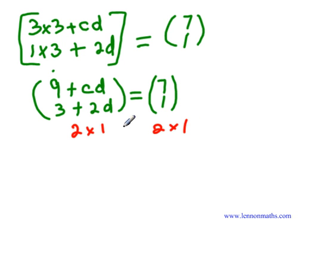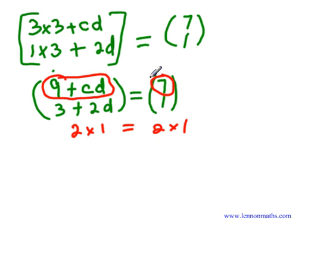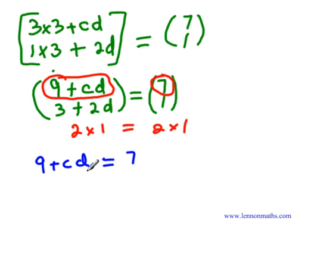When we have two matrices being equal, it means that the corresponding entries are also equal. If they are the same order, corresponding entries are equal. So the first entry of the first matrix equals the first entry of the second matrix. However, if we look at the first equation, we have CD equal to some value — we can't solve for C and D since there are two unknowns.